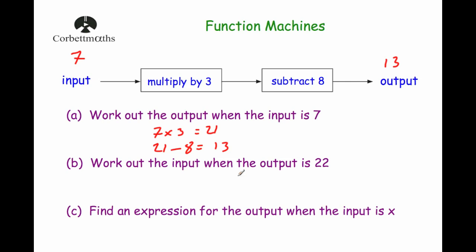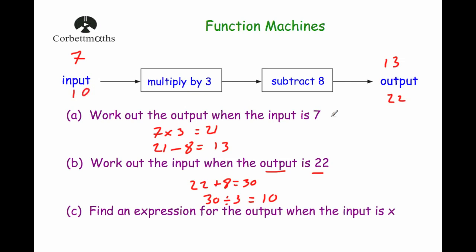Now work out the input when the output is 22. Notice the output is 22 — we need to go back and find the input. Using inverse operations: instead of subtracting 8, we add 8, so 22 add 8 equals 30. Then instead of multiplying by 3, we divide by 3: 30 divided by 3 is 10. So the input is 10. We can verify: 10 times 3 is 30, take away 8 is 22.